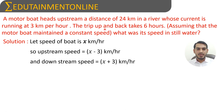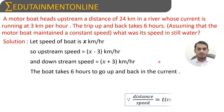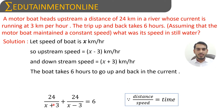It is given that the trip up and trip back takes six hours. Since we know that the formula for time is distance divided by speed, and the distance is 24 kilometers, we write 24 divided by (x plus 3) plus 24 divided by (x minus 3).